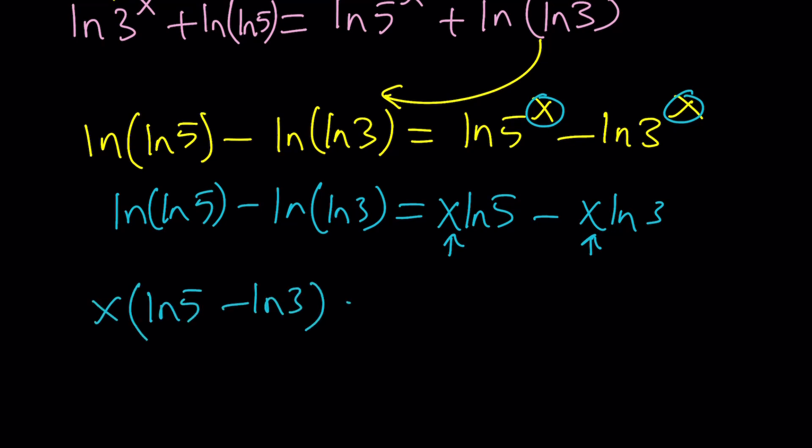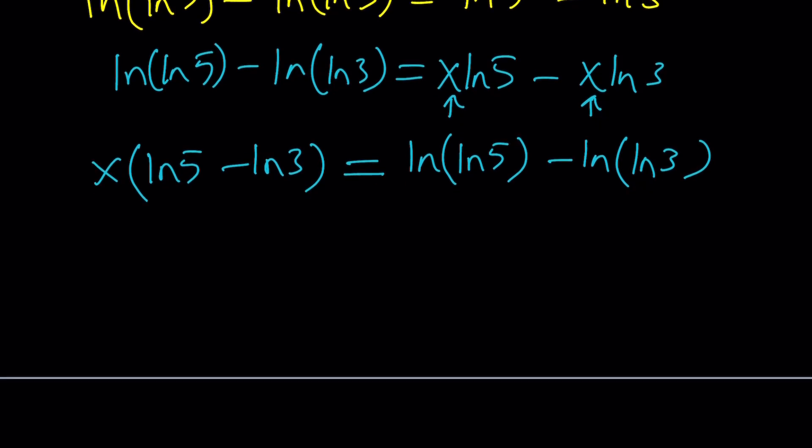So the next thing we're going to do is isolate x and solve for it. For that, we need to use properties of logs again. You can go ahead and move the x, write this as x ln 5 minus x ln 3 is equal to ln ln 5 minus ln ln 3. Now, we can go ahead and factor out an x and then write this as ln 5 minus ln 3. And then, since our goal is to solve for x, what should we do next? Divide both sides by ln 5 minus ln 3. So the answer would be then ln ln 5 minus ln ln 3 divided by ln 5 minus ln 3.